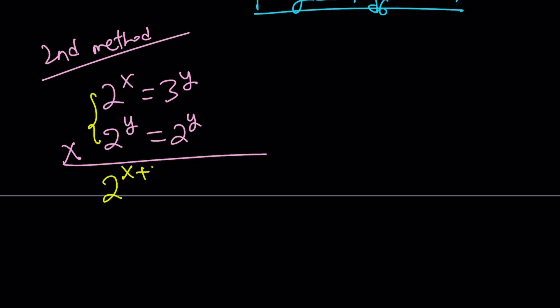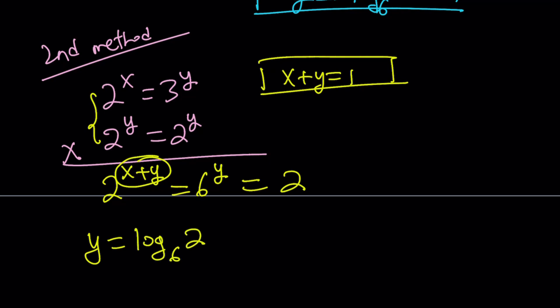When you multiply these two, you're going to add the exponent. So it's going to be 2 to the power x plus y equals 3 to the power y times 2 to the power y. Since they have the same exponent, you can multiply the bases. And that gives you 6 to the power y. We know that x plus y is equal to 1, so we can substitute here. 2 to the power 1 gives us 2.